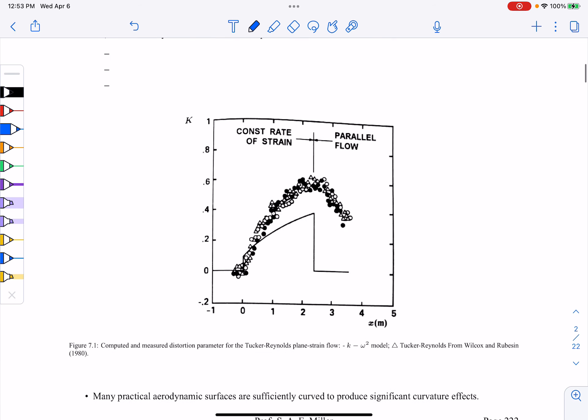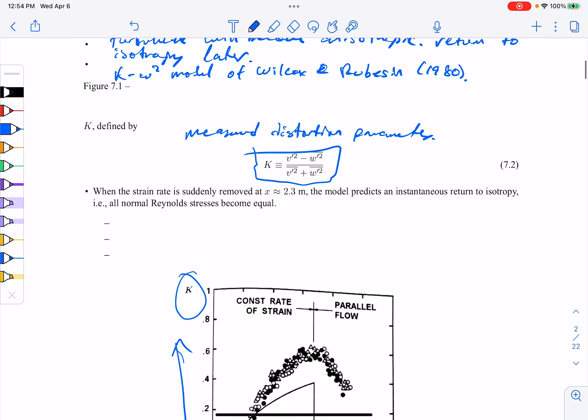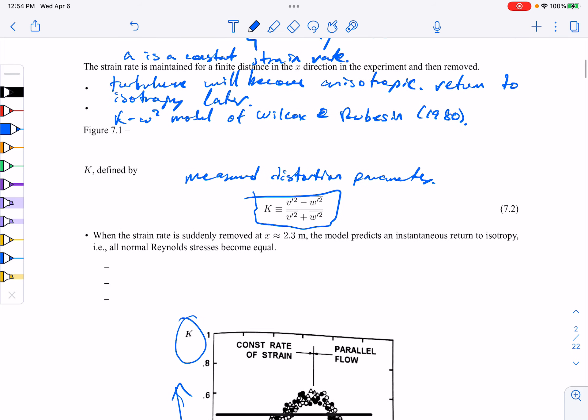So let's look at figure 7.1 quickly. The distortion parameter here is k on the y-axis. And here's the x-direction. These points are measurements of Tucker and Reynolds. This is adapted from the paper of Wilcox and Rubison, which we just referenced. And here's our prediction of the k-omega-squared model. You see it's relatively under-predicted. And there's somewhat of a discontinuity in their prediction. So that needs to be overcome, just as an example of where this might fail.